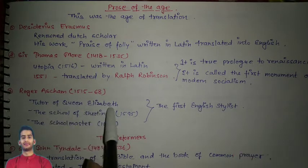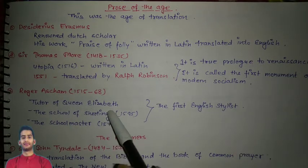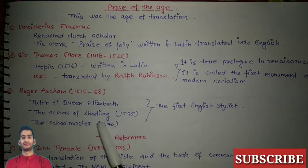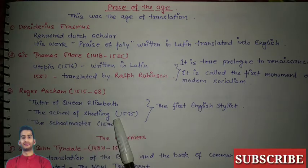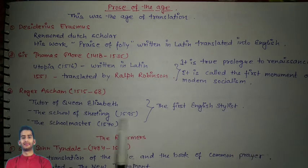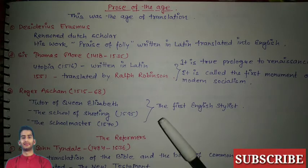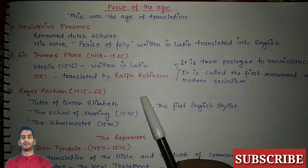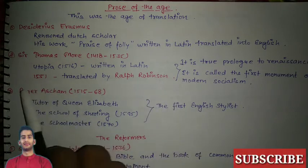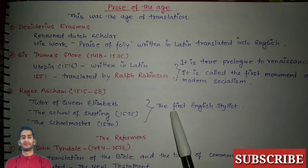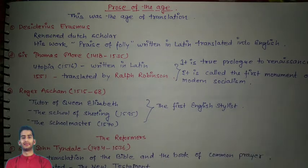Roger Ascham (1515–1568) was tutor of Queen Elizabeth. He wrote 'Toxophilus' in 1545 and 'The Schoolmaster' in 1570. He is also called the first English stylist.